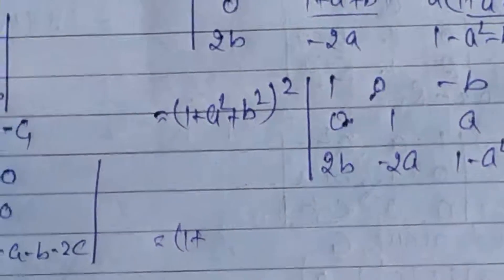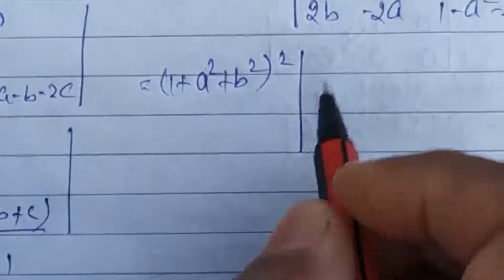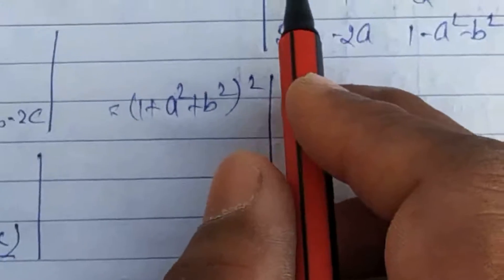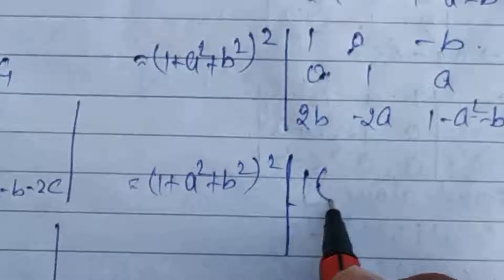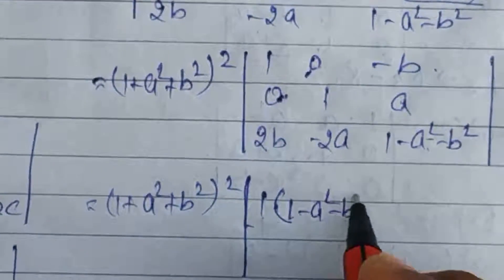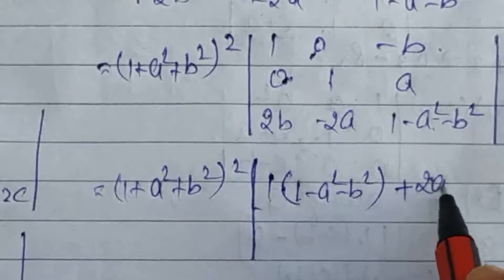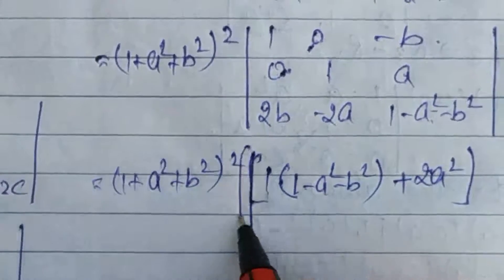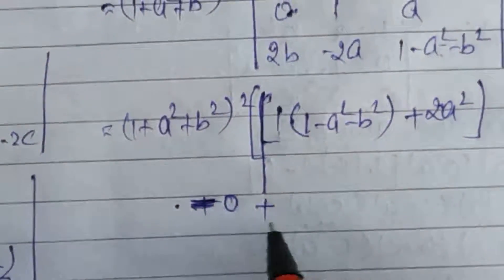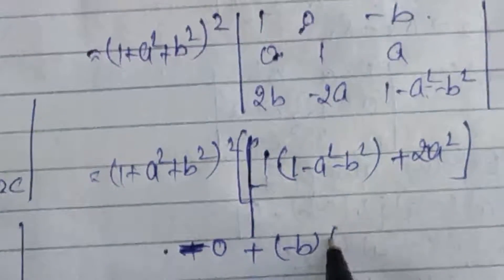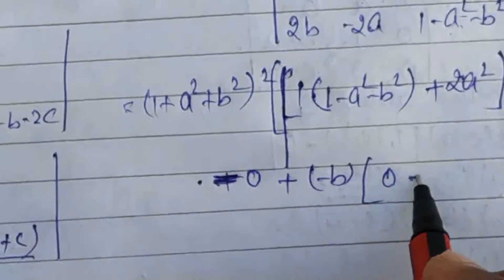अब इसको expand करने के लिए किसी भी row या column से expand कर सकते हैं। मैं first row के according expand करता हूँ। First column, first row remove होने पर: 1 की multiply से (1 minus a square minus b square) plus 2a square। Second element 0 है तो वह term 0 हो जाएगी। Third element minus b है, और first row third column remove करने पर: 0 into 2a minus 0 into 2b = 0।